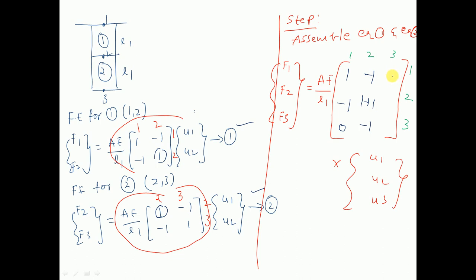There is no 3,1 element, so we write 0. The 3,2 element is -1 and the 3,3 element is 1. This is the way to assemble the finite element equations to form the global equations.